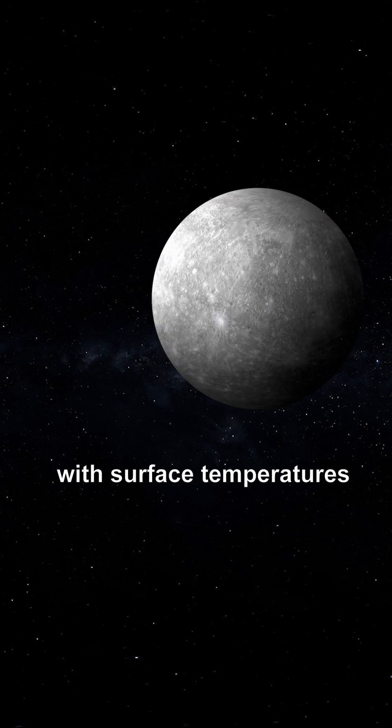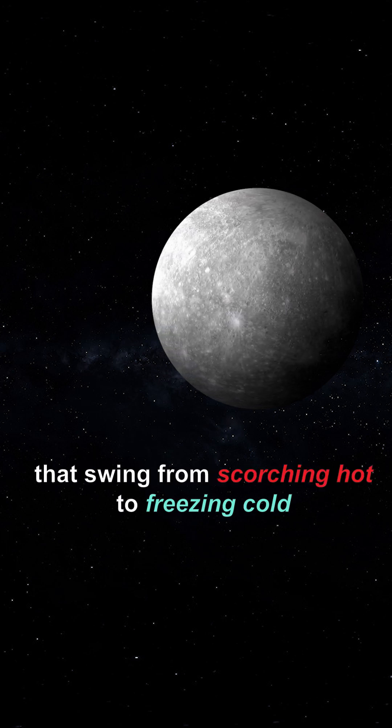Mercury is the fastest planet with surface temperatures that swing from scorching hot to freezing cold.